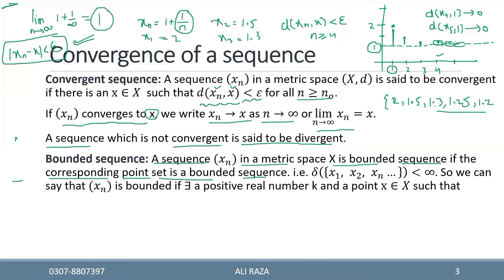اگر آپ اس کا corresponding point set لیں تو یہ values آہستہ آہستہ one کی طرف جا رہی ہیں۔ جب ہم n کو infinity تک لے جائیں گے تو one نہیں ملے گا۔ اس sequence کا سب سے بڑا نمبر two ہے۔ مطلب s_n کی تمام terms two سے کم یا برابر اور one سے زیادہ ہیں، اس لیے یہ bounded sequence ہے۔